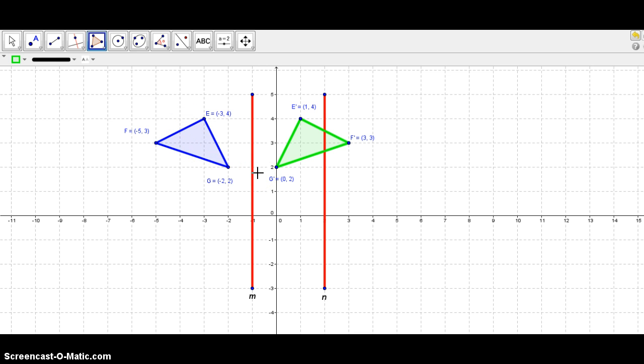Now eventually we said that we wanted to reflect it over parallel lines. So since we have reflected this shape over M, now we're ready to reflect the new shape over N. Okay, so it's the same concept.